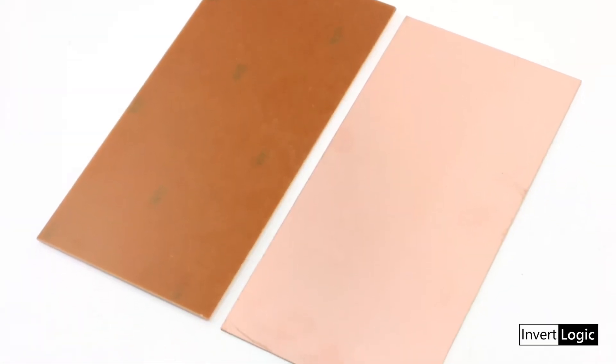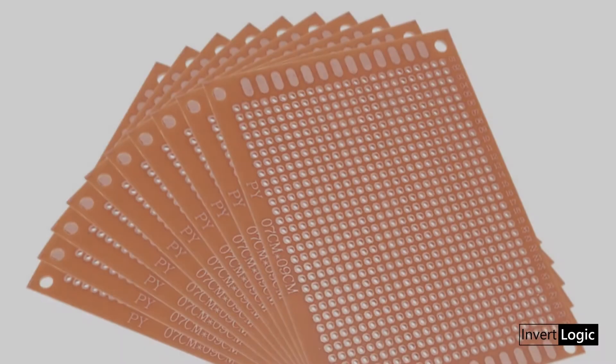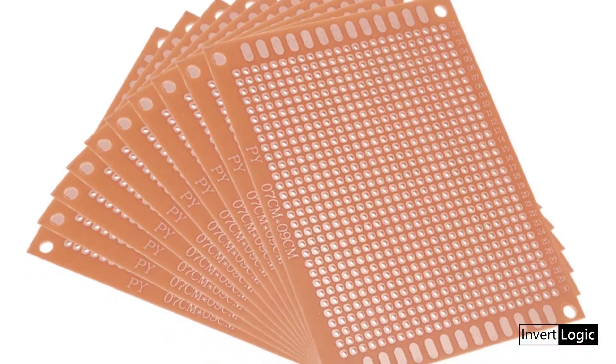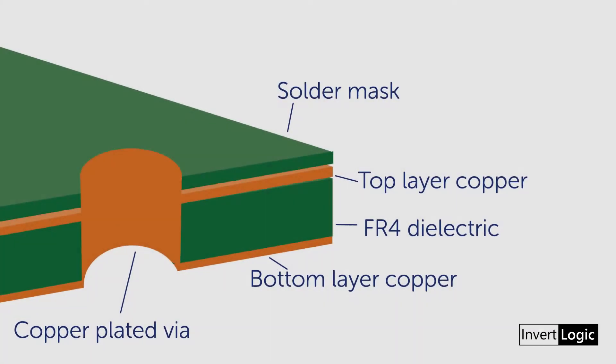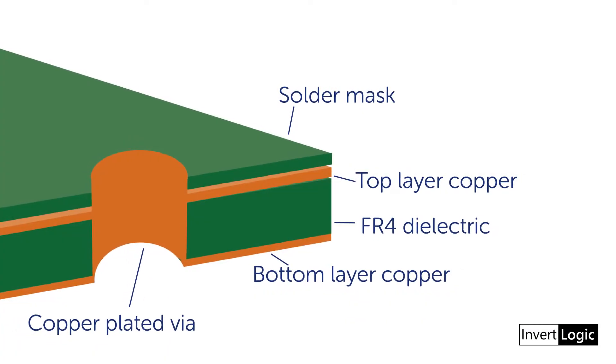It is fire-retardant glass epoxy laminate and is very durable as compared to other FR1, FR2 paper phenol-based material. Also when selecting the board, try to find the one with thicker copper clad.